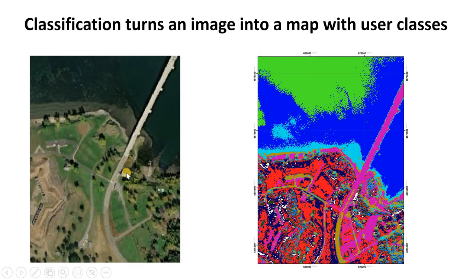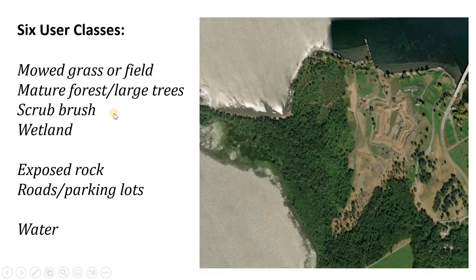So what is classification? We're going to be taking imagery — raster images — where each pixel is a number and turning that into a map where each pixel is now a user class. So instead of being a bunch of numbers, these pixels are now going to be classified as water or grass or so on. We're going to have seven user classes that we're trying to obtain.